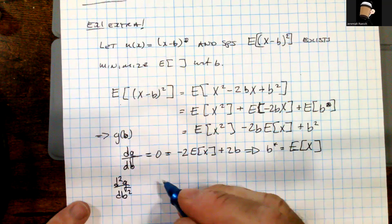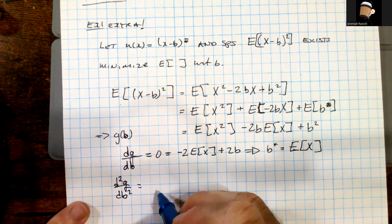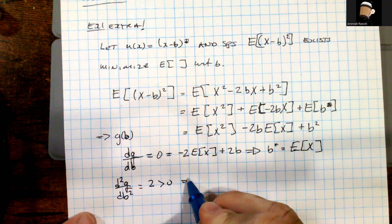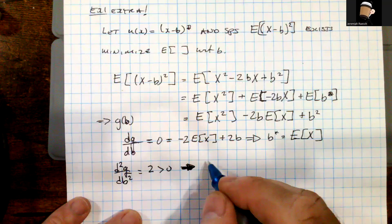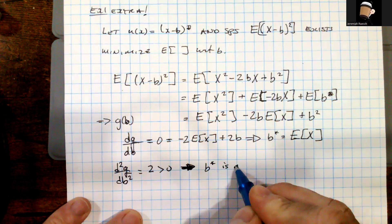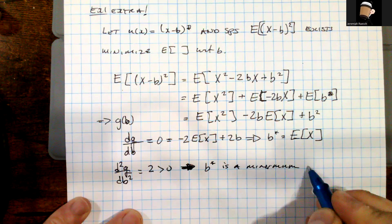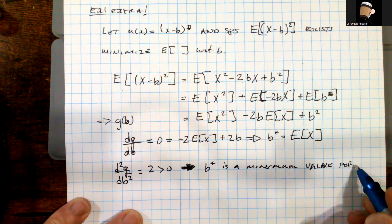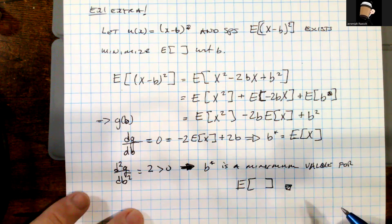Solving for b: the 2's cancel when I add E[x] over, which means b*, the critical value, is going to be equal to E[x]. If we consider d²g/db², that is exactly equal to 2, which is greater than 0. By the second derivative test, b* is a minimum for the expectation operator, which is exactly what we wanted to show.